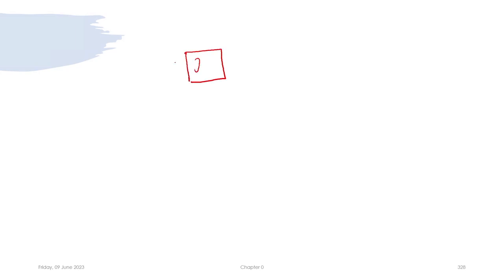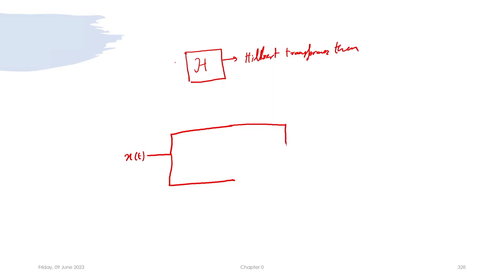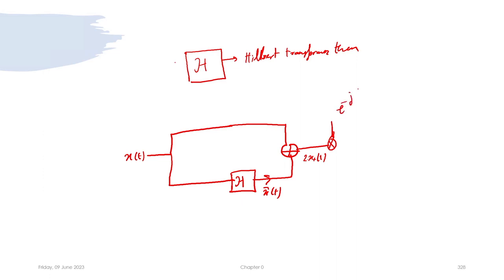So x(t) = x_i(t)·cos(2πf_c·t) - x_q(t)·sin(2πf_c·t). This is an amplitude modulated signal with x_i(t) as the in-phase component and x_q(t) as the quadrature component. If I have x_i(t) and x_q(t), I can construct x(t) using the Hilbert transformer. This is the low pass equivalent representation of a signal.